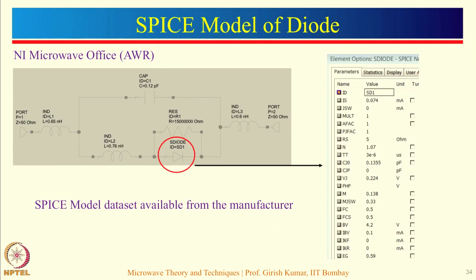The first part to focus on is the SPICE model of the diode, because diode simulation is very critical. The SPICE model lets you enter all the different diode parameters related to the junction — for example, saturation current, junction capacitance at zero bias, maximum junction voltage, reverse breakdown voltage, energy band gap, and so on. All specifications can be obtained from the SPICE model file available from the manufacturer. Once you import the model into the software and put in all the parameters, this diode will be simulated. Around the diode are components which account for the package parasitics, which are also included in the model.